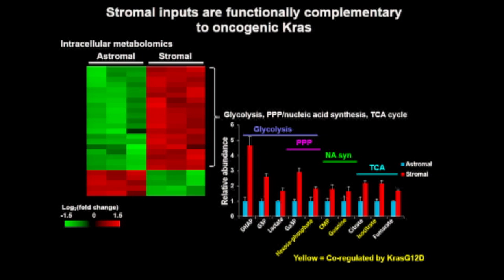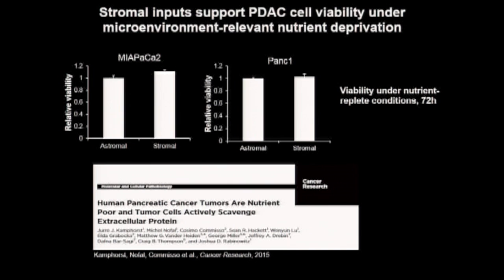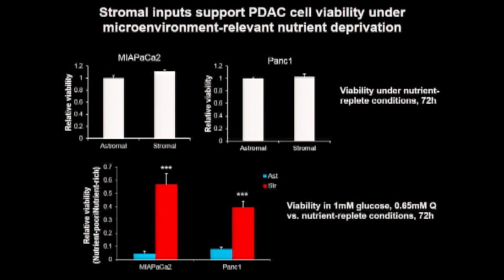I thought these metabolic and transcriptional changes may impart a growth advantage to pancreatic cancer cells in the presence of stromal signals. Pancreatic cancer cells grow to a very similar extent whether stromal signals are present or not, so long as they're in nutrient-replete conditions. But pancreatic tumors are not nutrient replete — metabolomic analysis of human pancreatic cancers shows these tumors are nutrient poor, depleted for key carbon sources glucose and glutamine. Under lower glucose and glutamine concentrations relevant to human pancreatic cancer, stromal signals impart a significant growth advantage to pancreatic cancer cells.